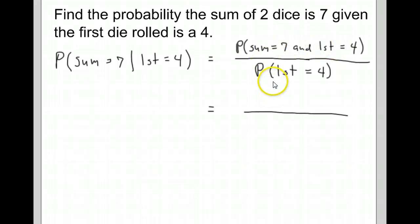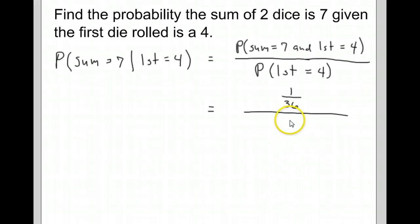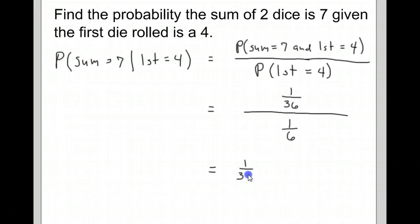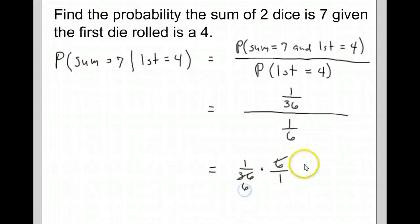What's the probability the sum equals seven and the first die is a four? For the sum to equal seven with the first die being a four, we had to have a four and a three — there's no way around it. So there's one way for that to happen out of the 36 possible rolls. What's the probability the first die is a four? That's one out of six, since there are six outcomes for the first die. Then we do this division: 1/36 divided by 1/6. Dividing fractions means flip and multiply, and we end up with a probability of 1/6.